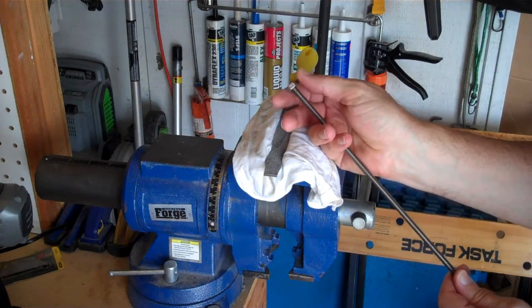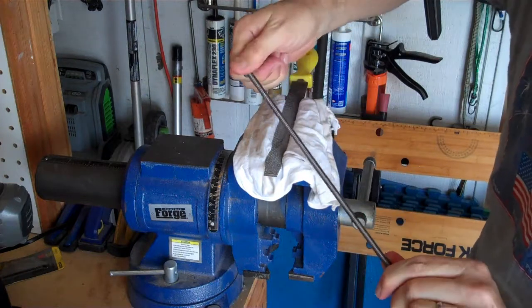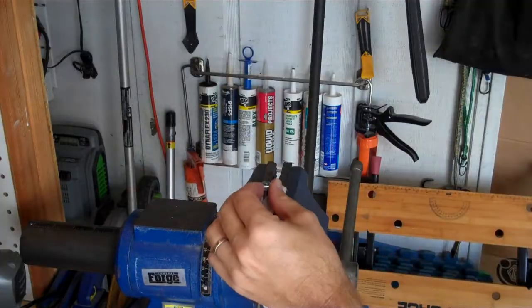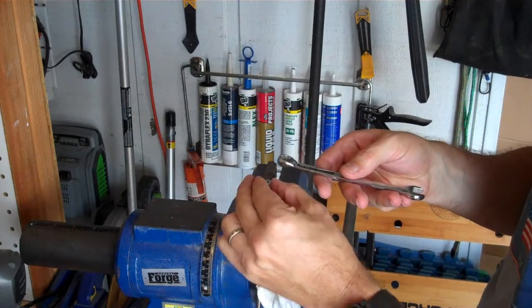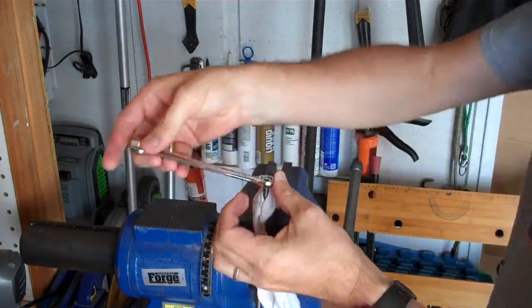And you might need to get a wrench out for this. Sometimes you can do it with finger strength. Sometimes you need a little mechanical advantage. So if you mess up the threads a lot, you might need a wrench to help get that thing off.